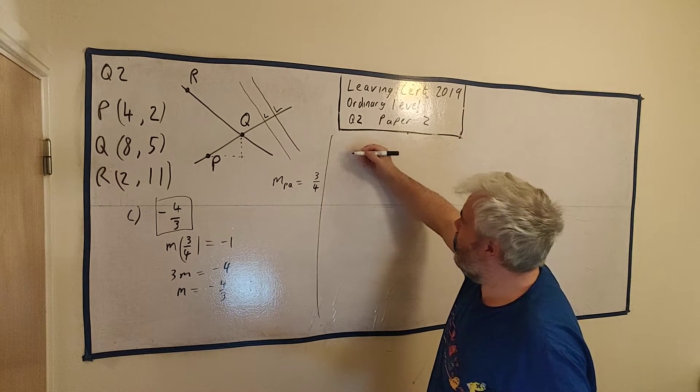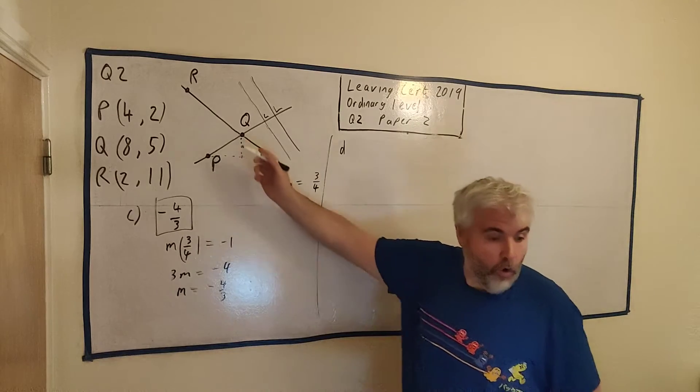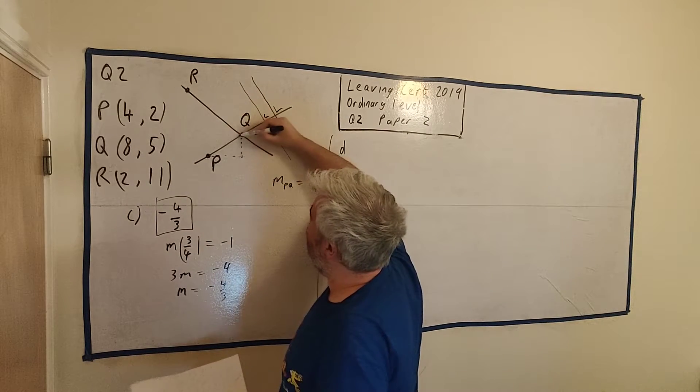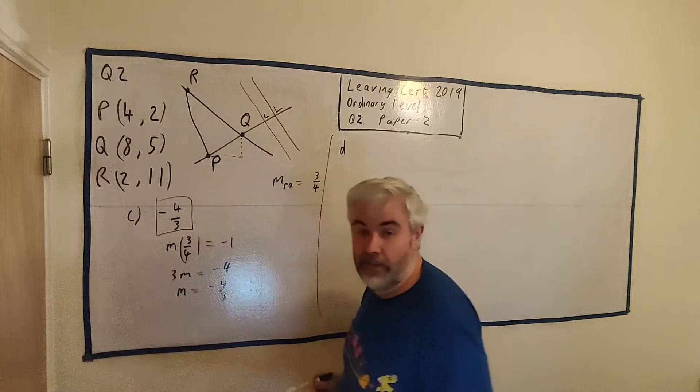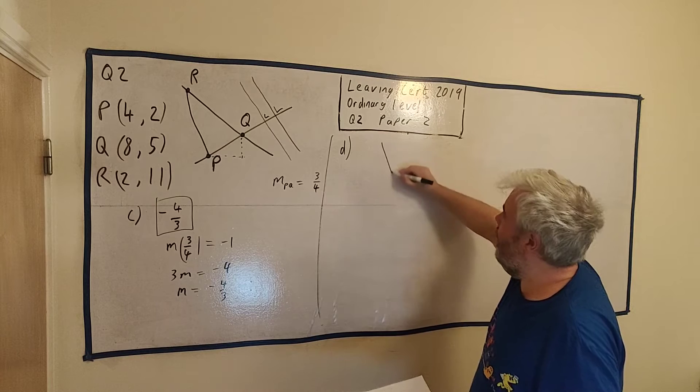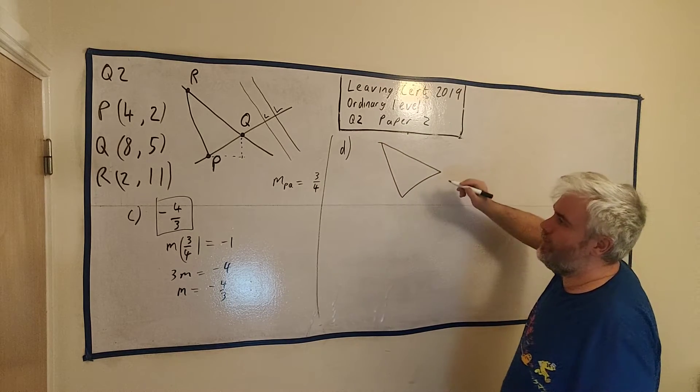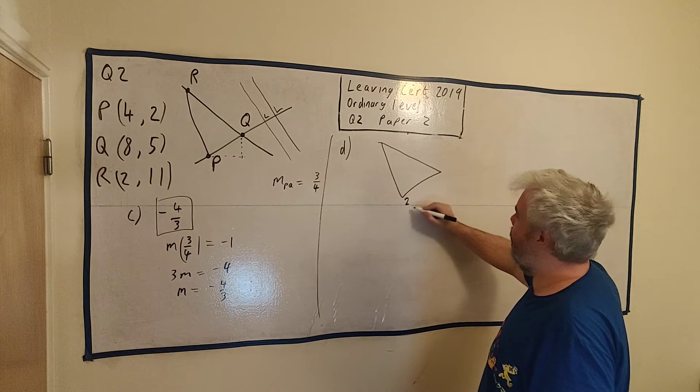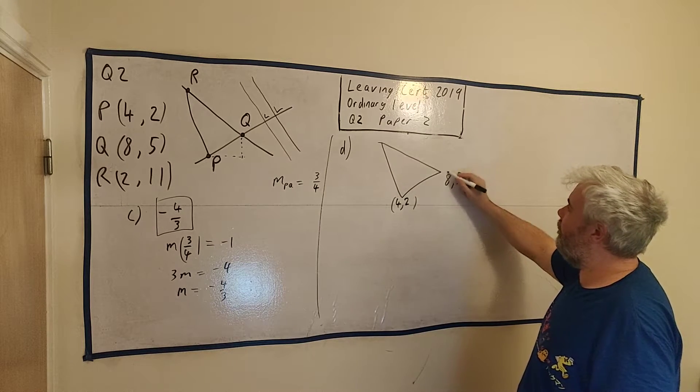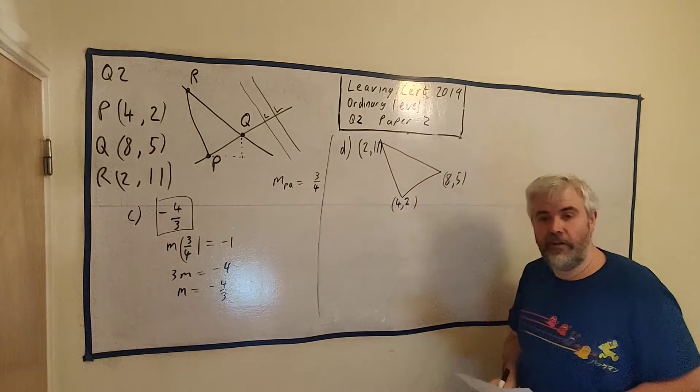Part D asks us to find the area of the triangle PQR, this triangle here. Let me draw that again with the points: P is (4, 2), Q is (8, 5), and R is (2, 11).